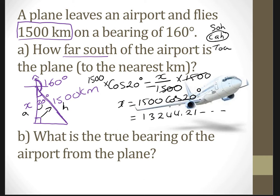Because the answer needs to be to the nearest kilometer, which means whole number. So look at this number — the digit after is 2, which is less than 5, so your answer is 1409 kilometers. That's your answer.